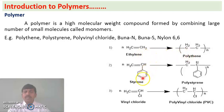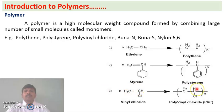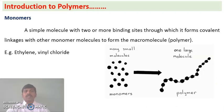Another example: styrene — CH₂=CH−(phenyl group) — this is styrene. N number of styrene molecules give rise to polystyrene. Another example is polyvinyl chloride, which is the polymer formed from vinyl chloride. These are examples of polymers.